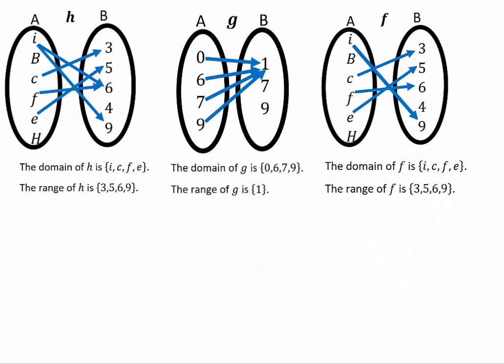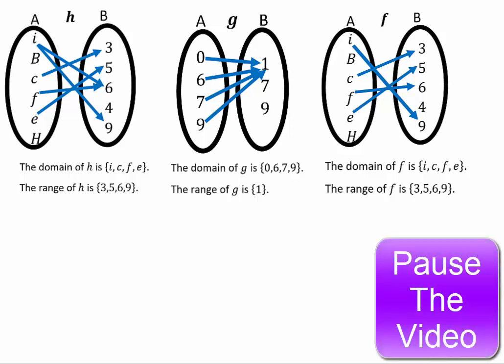So now if you look at all three relations we have looked at, why don't you study them together and see what are the similarities and differences between them — especially h and f — because they both have the same domain and range, but are there any differences in the two relations? Pause the video here and see what you can come up with.